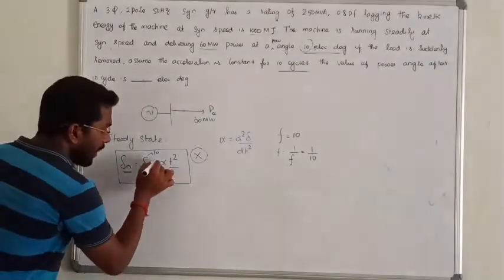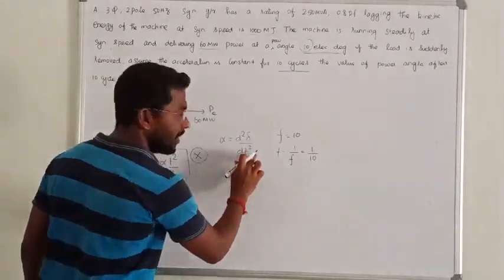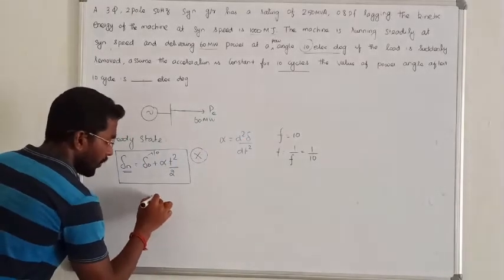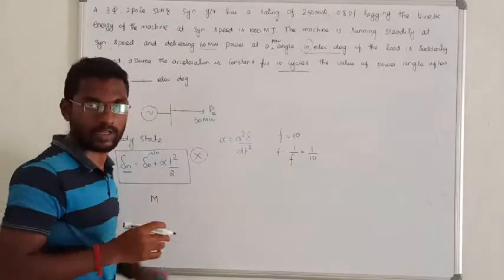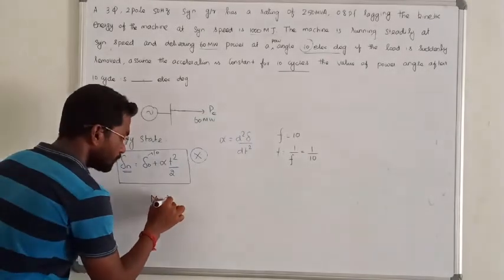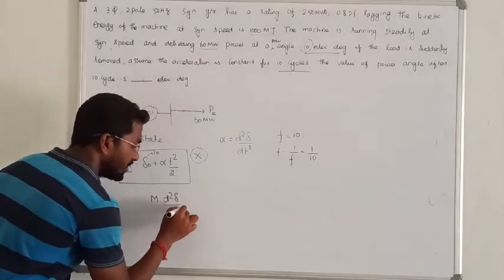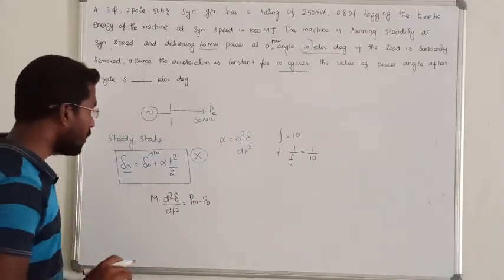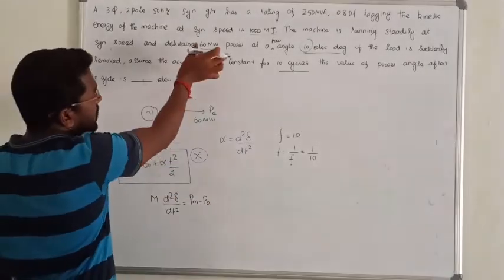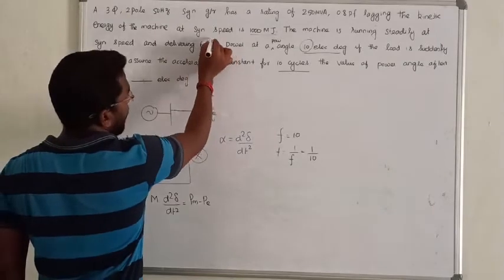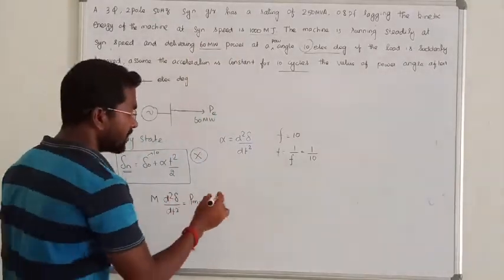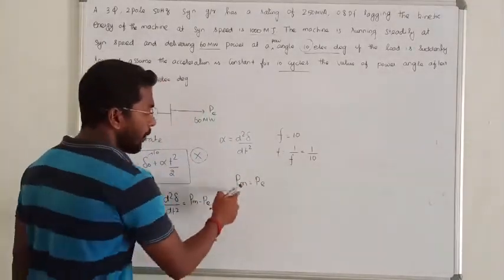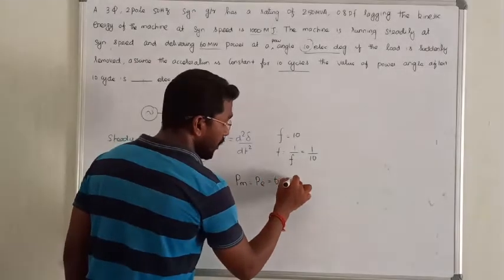Now we know the value of t. Alpha equals d²δ/dt², and we calculate this from the swing equation. The value of d²δ/dt² equals mechanical power minus electrical power. In steady state — case number 1 — mechanical power equals electrical power equals 60 MW.